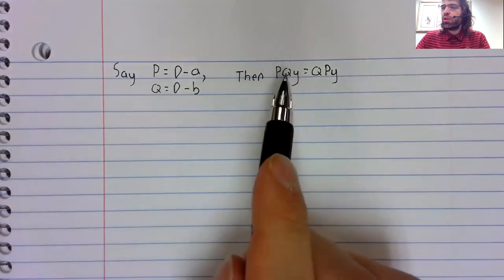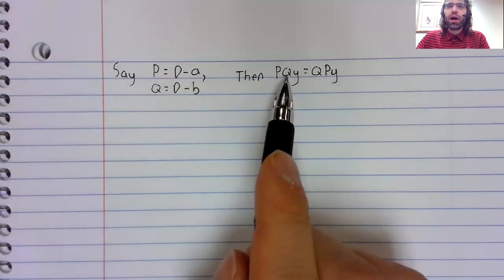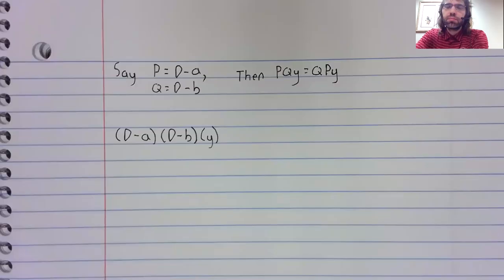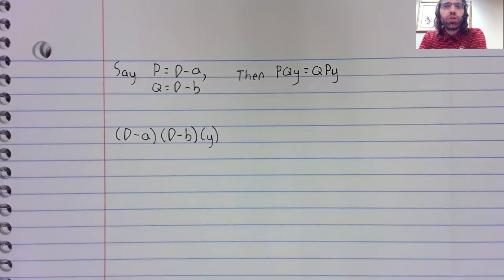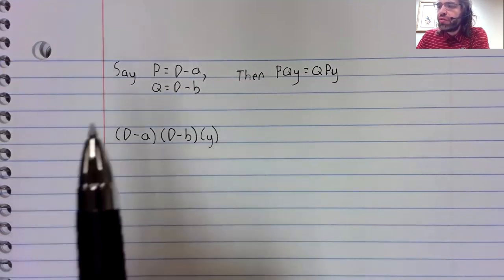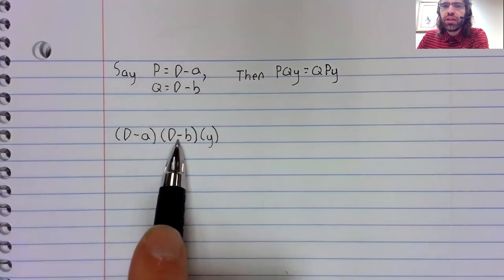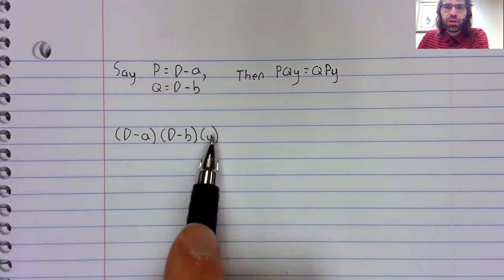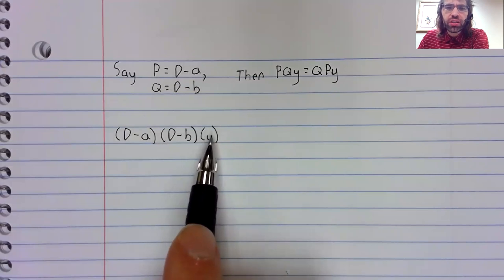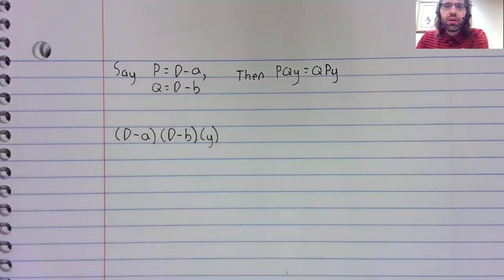And let's prove this. Let's write down p q y. Remember, this looks like multiplication, but it isn't multiplication. This is a function applied to a function applied to an input. It's composition.